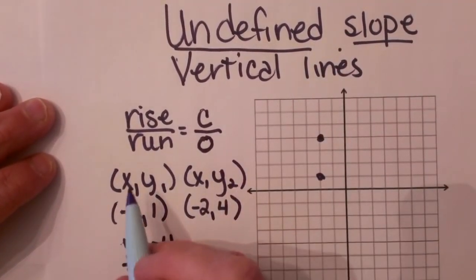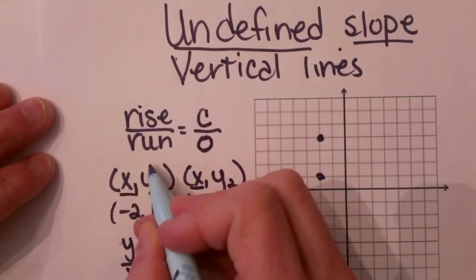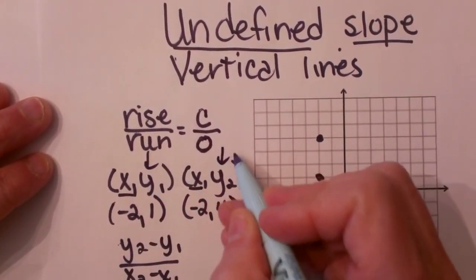So what do the ordered pairs look like? Well, the x's will be the same value, but the y's will be different values.